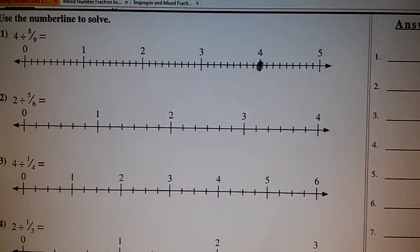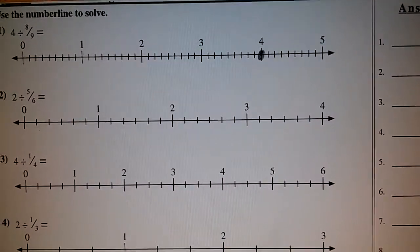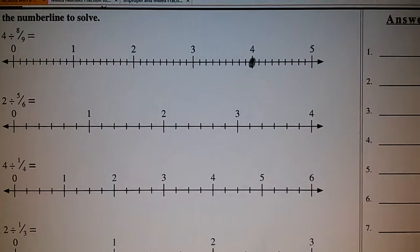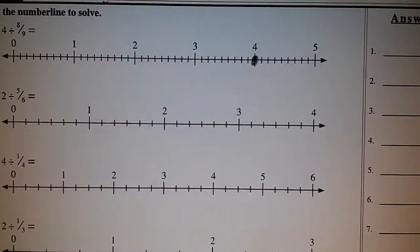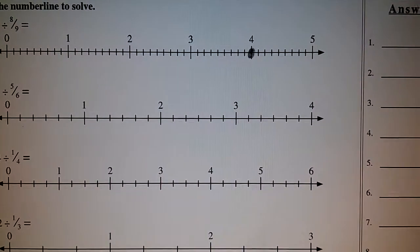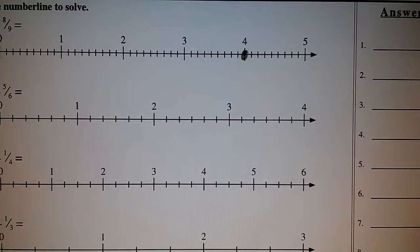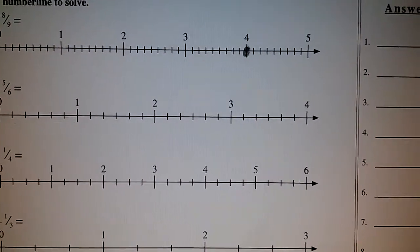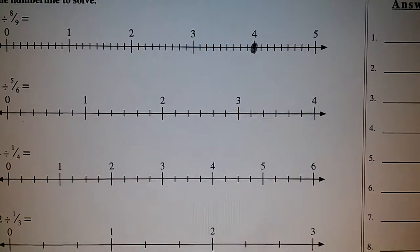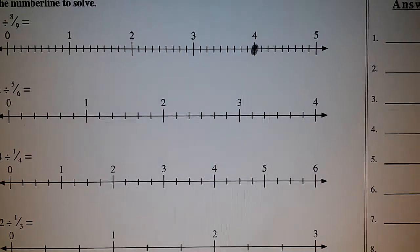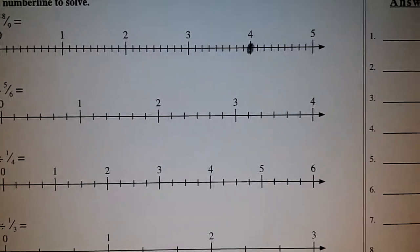Eight ninths is a divisor, so we want to divide the four by eight ninths. Looking at the denominator, we know that there are nine parts in a whole. Looking at the numerator, we know that we are only considering eight of the nine parts.